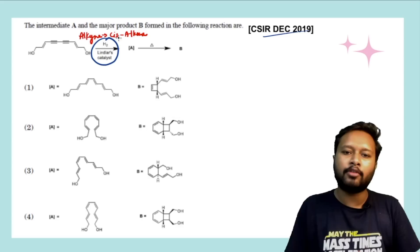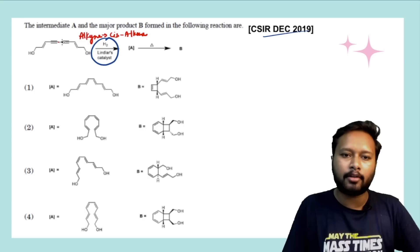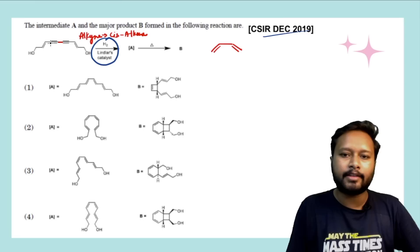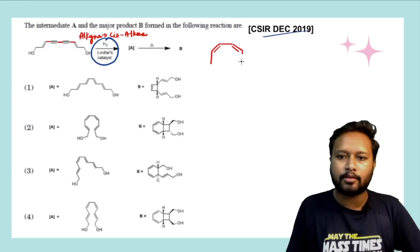Starting from this particular bond, these two bonds are going to get converted into a double bond. Since these are cis, the next bond is going to be cis to this one as well. So they are now cis to this particular bond.